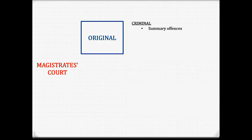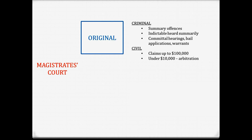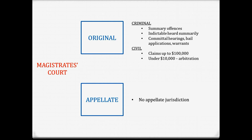Firstly, the Magistrates Court. Its original jurisdiction for criminal cases: it can hear summary offences or minor crimes, some indictable offences heard summarily, committal hearings, bail applications and warrants. Its original jurisdiction for civil matters is for claims up to $100,000 in value, and anything under $10,000 gets referred to arbitration. The Magistrates Court doesn't have an appellate jurisdiction because it's the lowest court in the hierarchy — it can't hear cases on appeal.